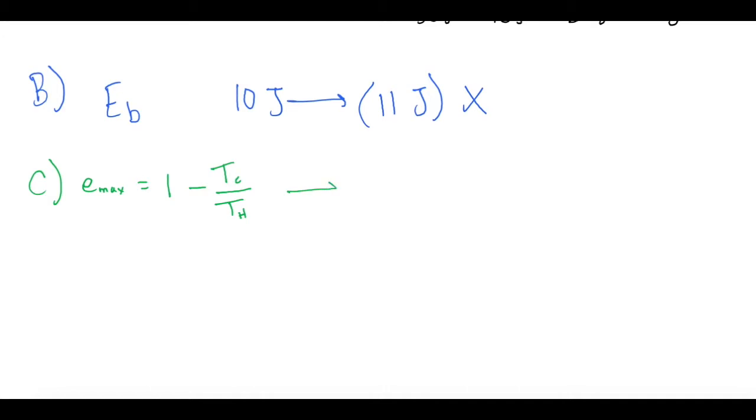So we can do this once and the answer will be the same for all of them. So Emax is equal to 1 minus 300 Kelvin over 600 Kelvin, which gives us 1 minus 3 over 6, which is the same as 1 half. So we get 1 minus 0.5, and so we get 0.5, or 50% is our theoretical maximum efficiency for all of those. So when you put it in, we'll have 0.5, 0.5, and for engine C, 0.5.